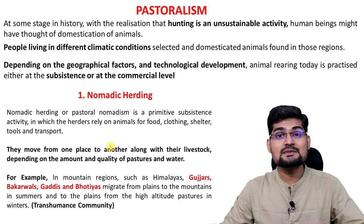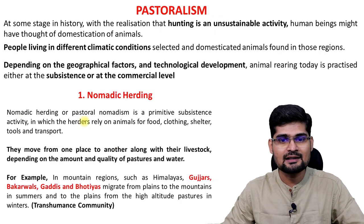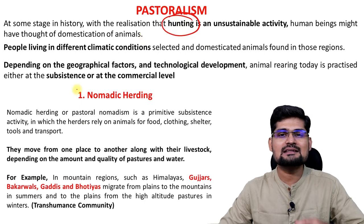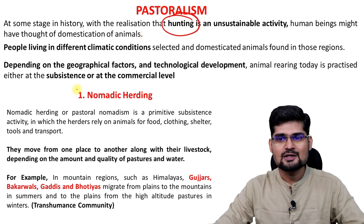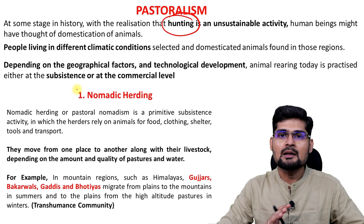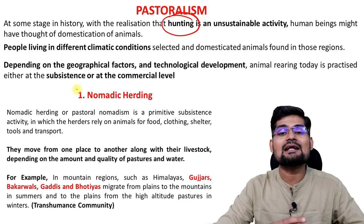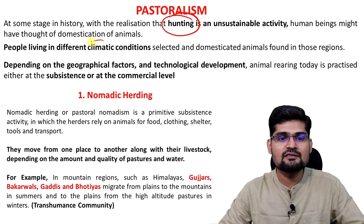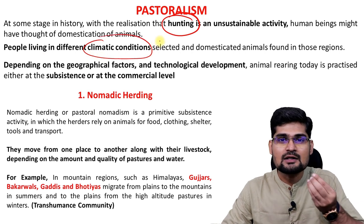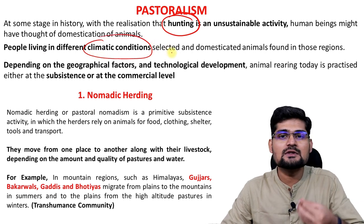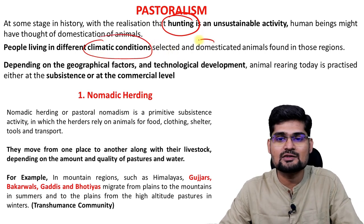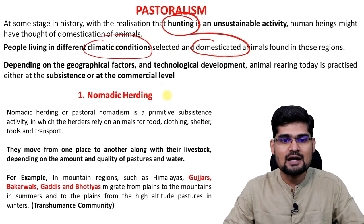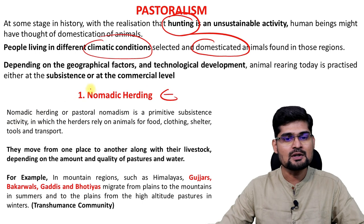Pastoralism is the second activity after hunting and gathering. Hunting was considered unsustainable, so petting animals became important and pastoralism came after that. People living in different climatic conditions selected those animals which could be domesticated. So the function here is domestication of animals, under which you have several types of pastoralism.